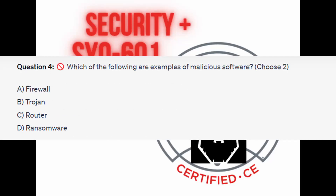Question number four: which of the following are examples of malicious software? Choose two. Is it A, firewall? Is it B, trojan? Is it C, router? Or is it D, ransomware?